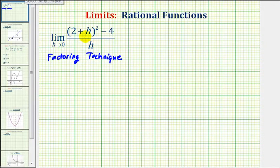To use the factoring technique, we need to recognize that the numerator is a difference of squares, because we have the quantity two plus h squared, and we can write four as two squared. So the numerator fits the form of a squared minus b squared, which can be factored as a difference of squares.